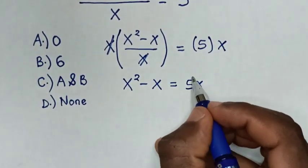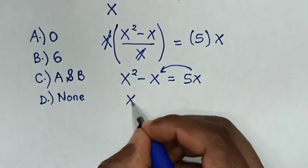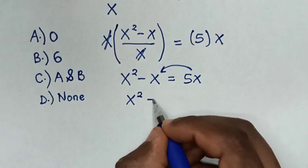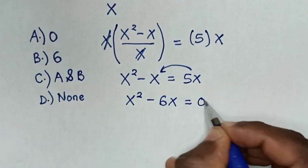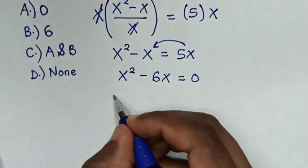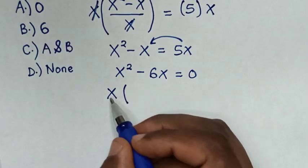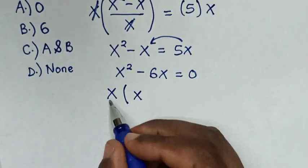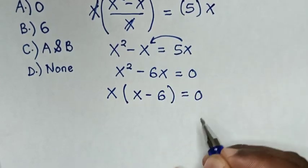Then we take 5x to the left side, so it will be x squared minus x minus 5x, which gives x squared minus 6x is equal to 0. Then x is common, so we factor out x: x times (x minus 6) equals 0.